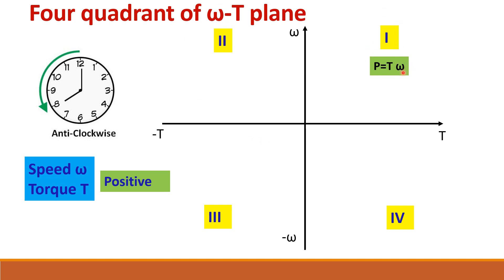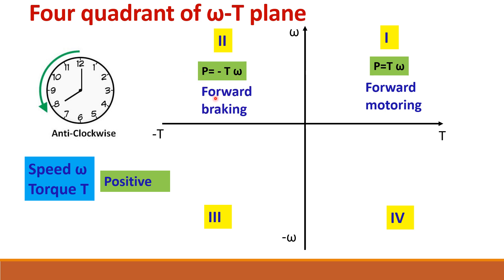The formula for power is speed multiplied by torque, i.e., P = ω × T. In the first quadrant, ω is positive and T is positive, so power is positive — this is called forward motoring mode. In the second quadrant, speed is positive but torque is negative, so power is negative, meaning braking. Since speed is positive, this is forward braking mode.